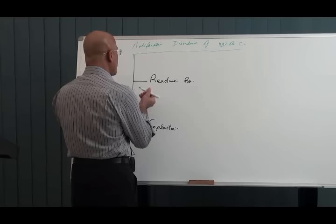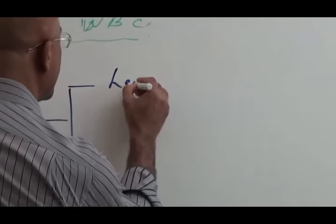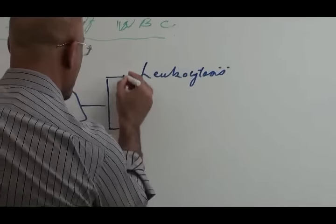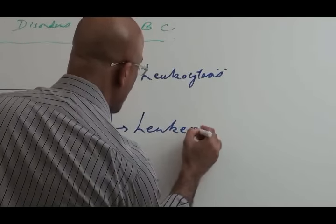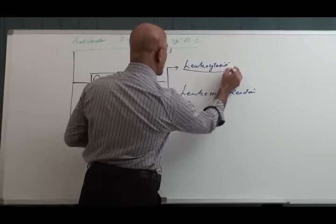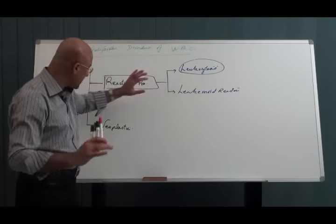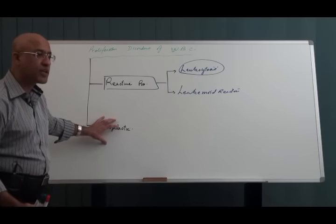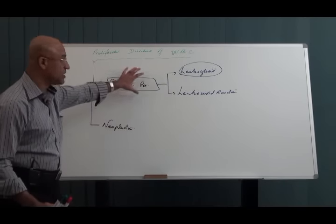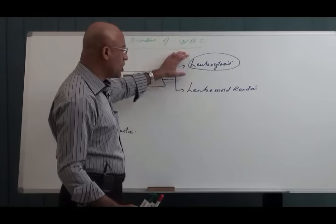Reactive proliferations are of two types: number one is simple leukocytosis, and number two is leukemoid reaction. I'm not going to go into detail of these two things because today's real topic is neoplastic proliferations, especially leukemias. I'm just mentioning them so you don't confuse neoplastic proliferations with reactive proliferations.